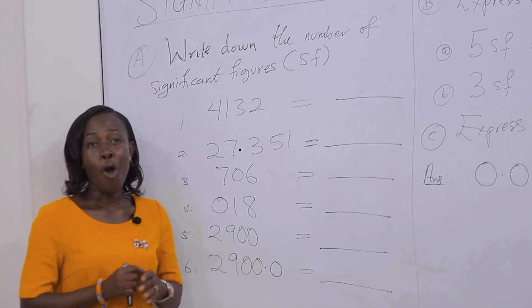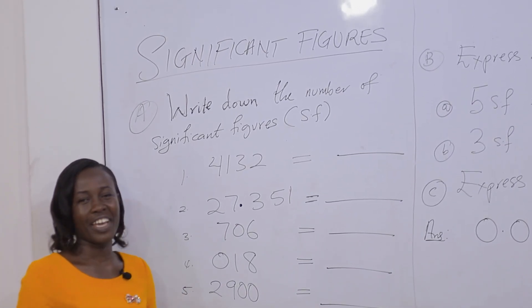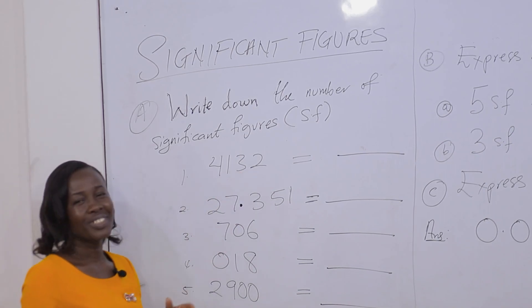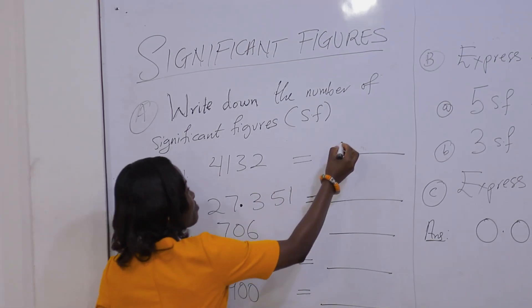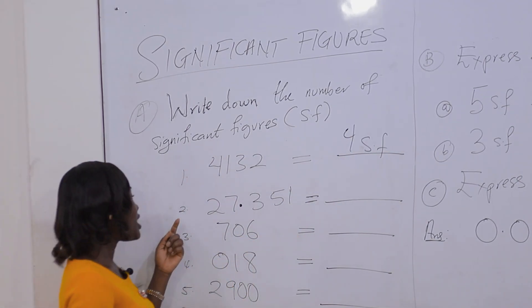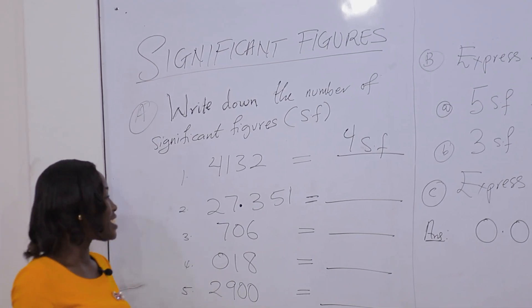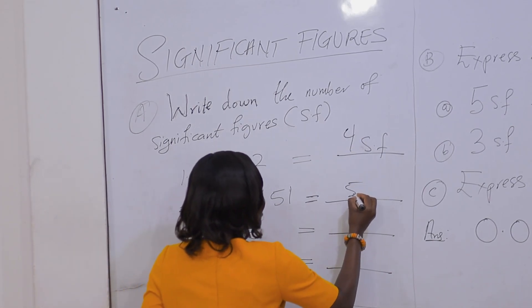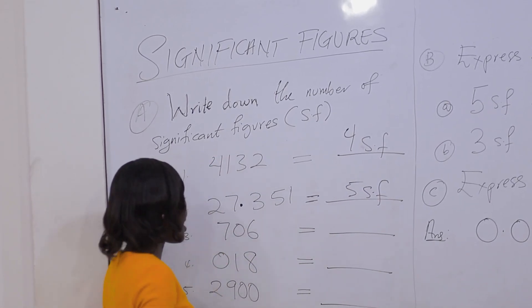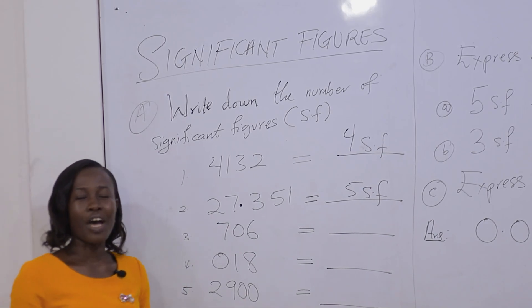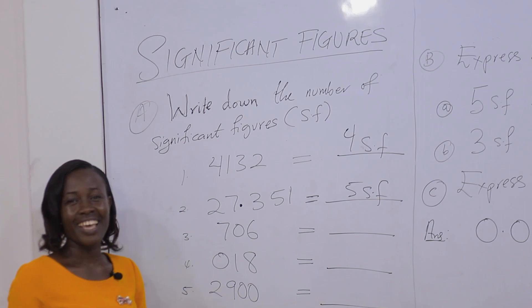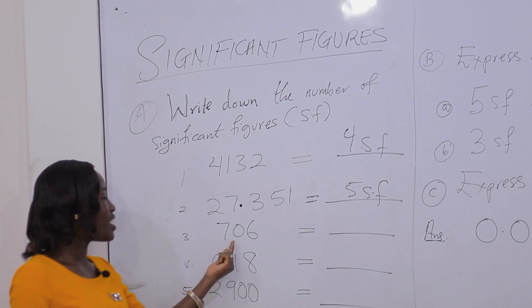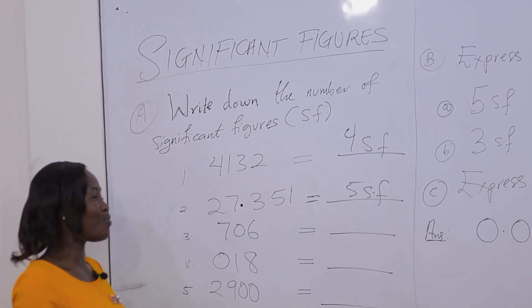Rule 1: All non-zero digits are significant. From example 1, 4132 has 4 significant figures. Example 2: 27.351 has 5 significant figures. Rule 2: Zeros found in between 2 significant figures are considered significant. So for example 3, 706 has 3 significant figures.